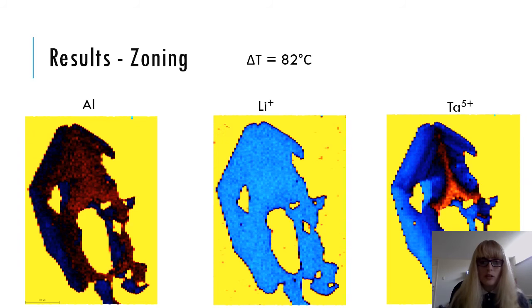As undercooling increases, clinopyroxene becomes progressively more skeletal and the type of compositional zoning changes. So this experiment was conducted at 82 degrees of undercooling and we see that the aluminium zoning in the map on the left here becomes more irregular. This zoning style has been described as consisting of aluminium-rich skeletons and aluminium-poor overgrowths by one of my collaborators. Similar to the low undercooling conditions, lithium doesn't differentiate between zones, while tantalum does so.